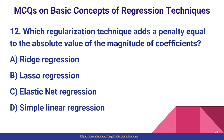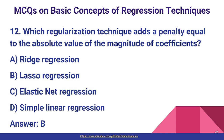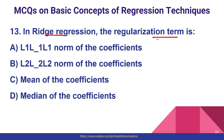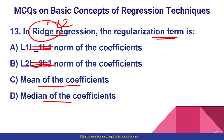Question number twelve: which regularization technique adds a penalty equal to the absolute value of the magnitude of coefficients? That is lasso regression — in its formula we add a penalty equal to the absolute value of the magnitude of coefficients. Question number thirteen: in ridge regression, the regularization term is the L2 norm of the coefficients. To summarize: lasso is L1, ridge regression is L2, so the answer is L2 norm of the coefficients.